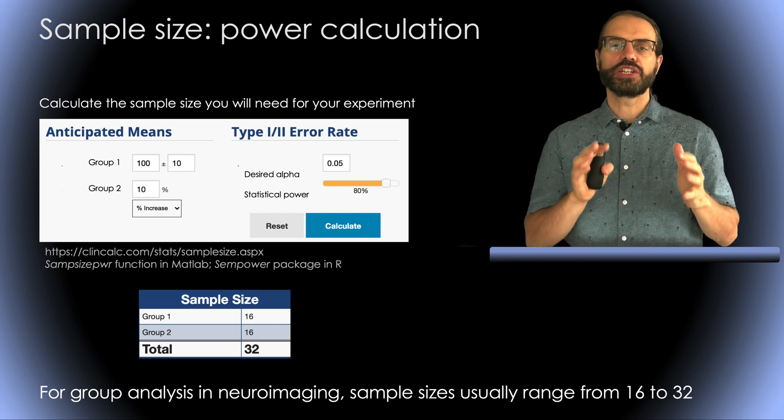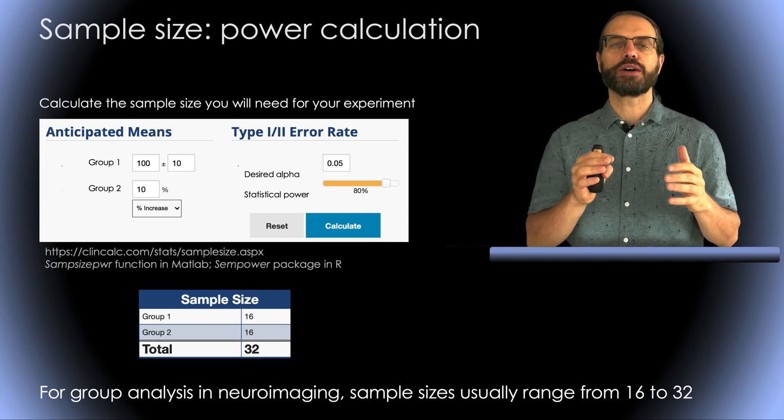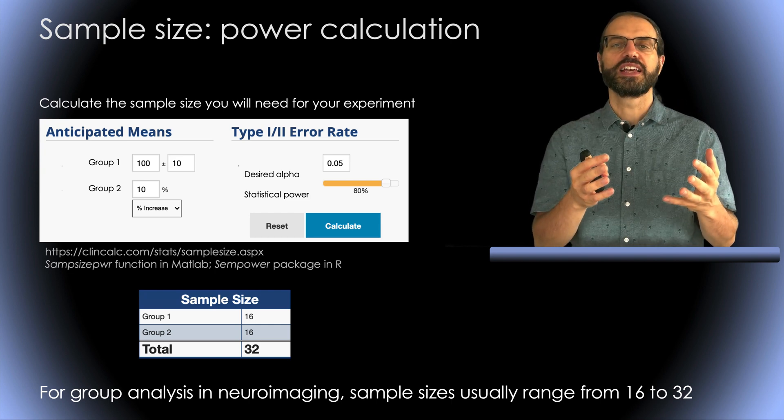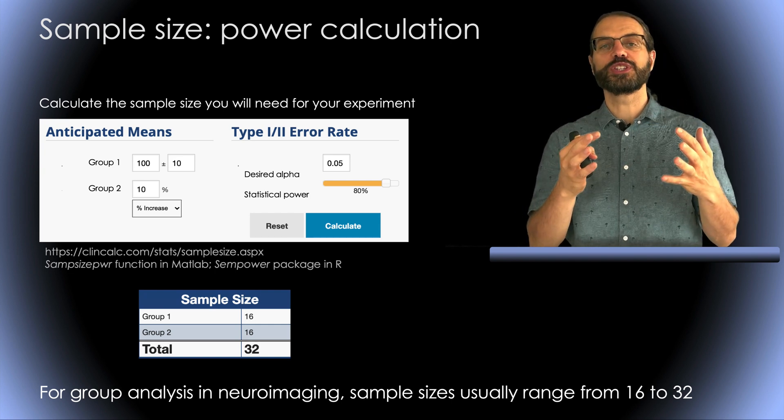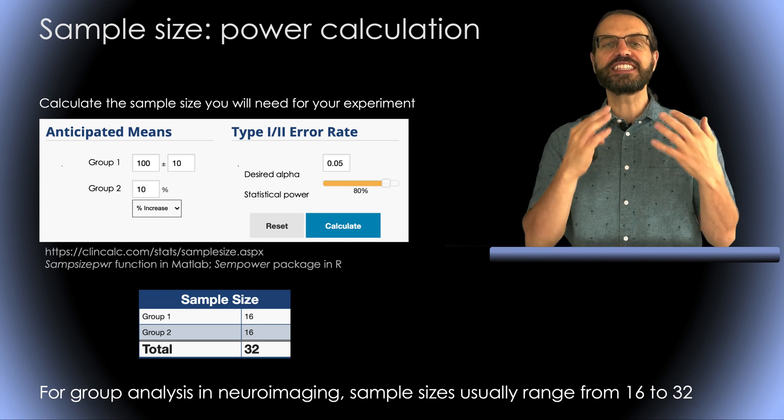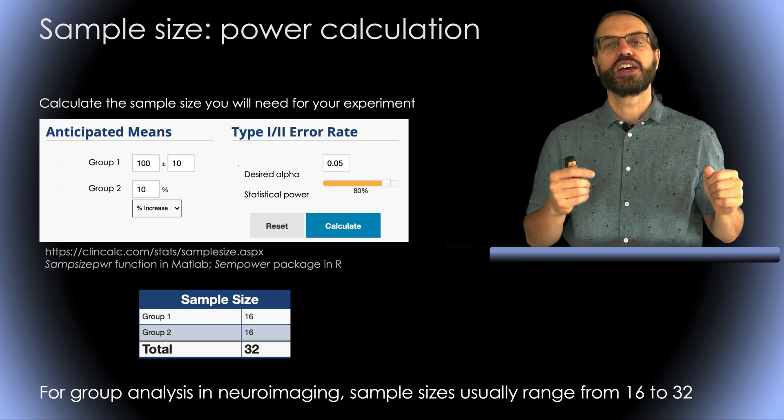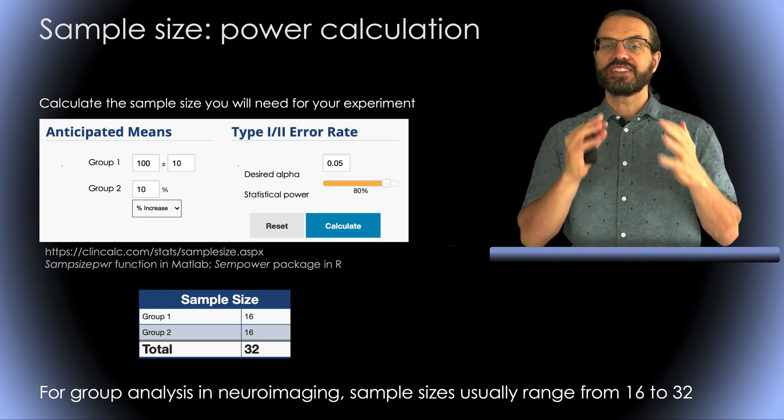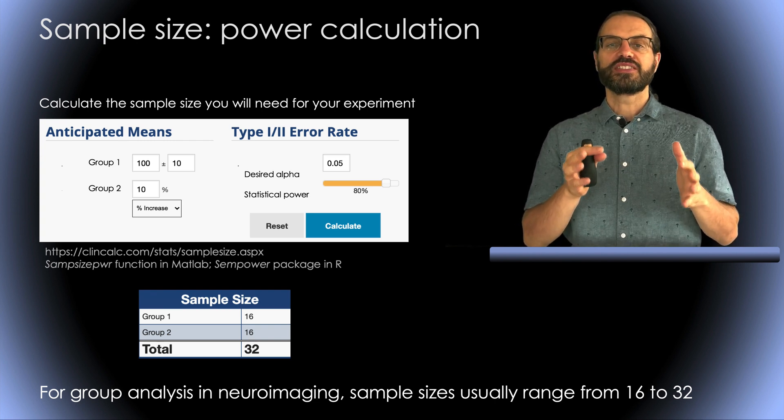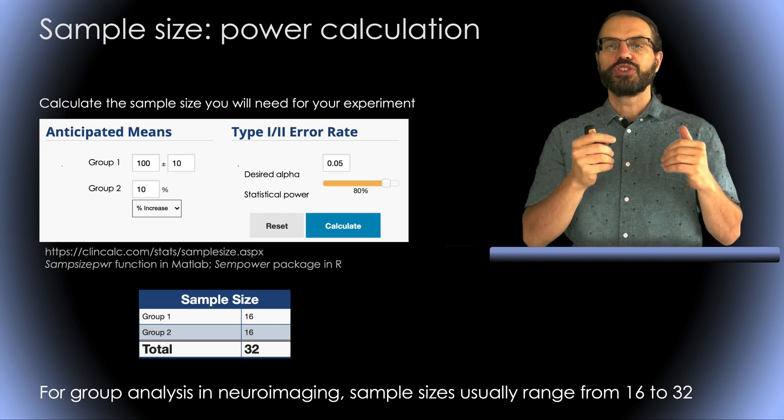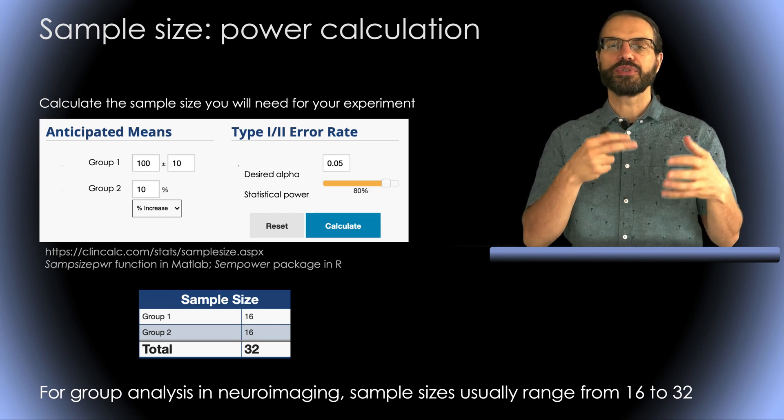The other advantage of considering effect size and statistical power is that it can help you to calculate your sample size. These days, it is difficult to get a grant accepted without at least a basic power calculation to justify your sample size. Once you know your desired alpha value, your desired statistical power and expected effect size, you can use standard tools to calculate sample size.